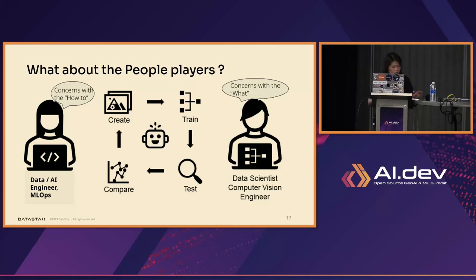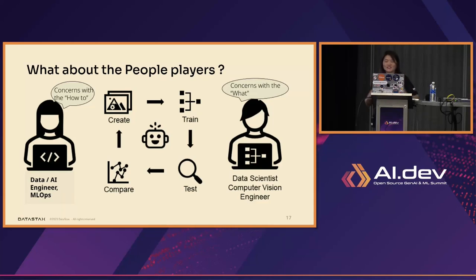In terms of players — roles — there are data scientists and computer vision engineers who are more concerned with the 'what,' the subject matter of generative AI, and may not be as concerned with how things are being implemented. The ones implementing things are data engineers, AI engineers, MLOps, and DevOps engineers. We should be working together, helping each other out. We have to understand the different roles that different people play.